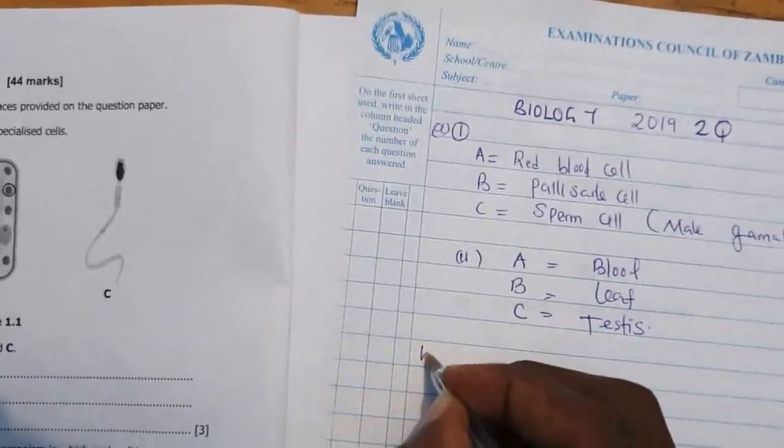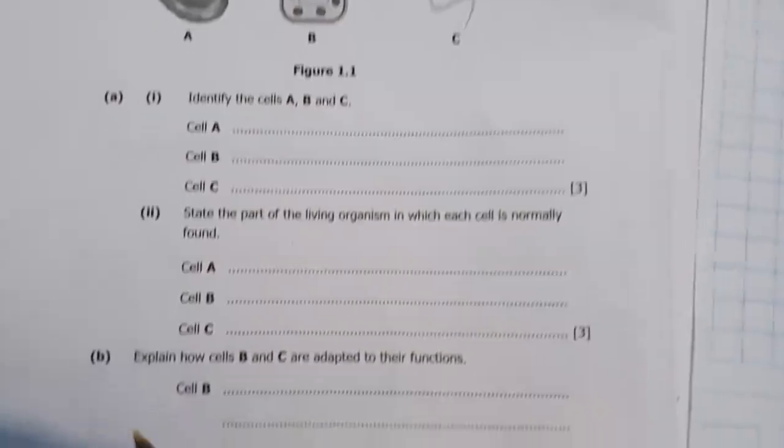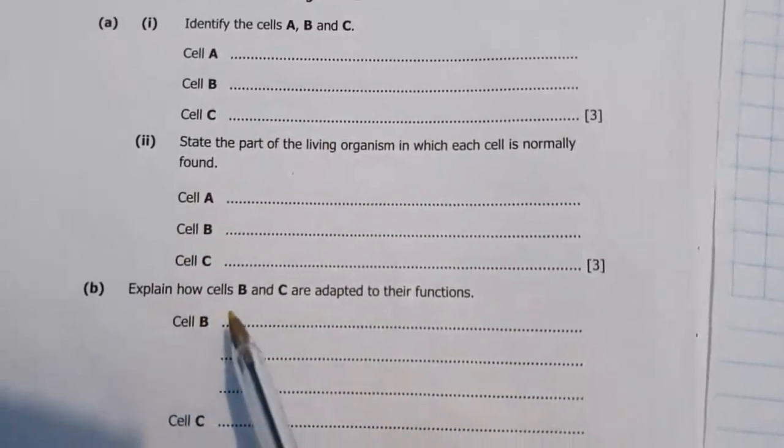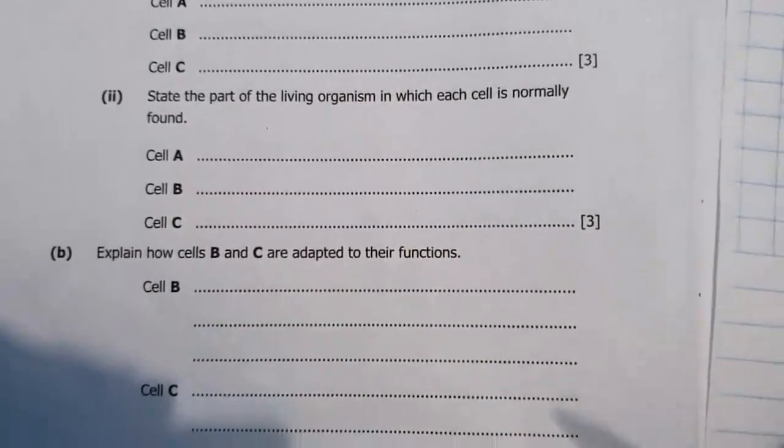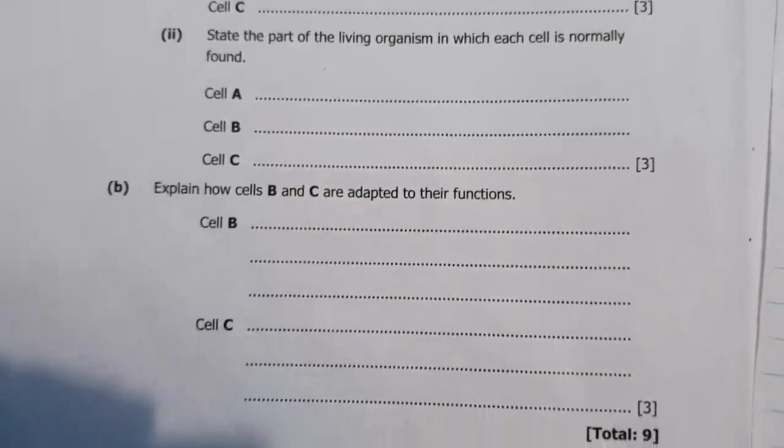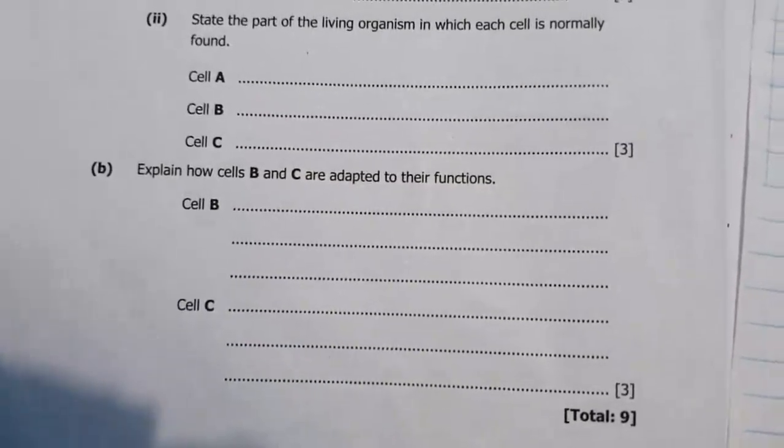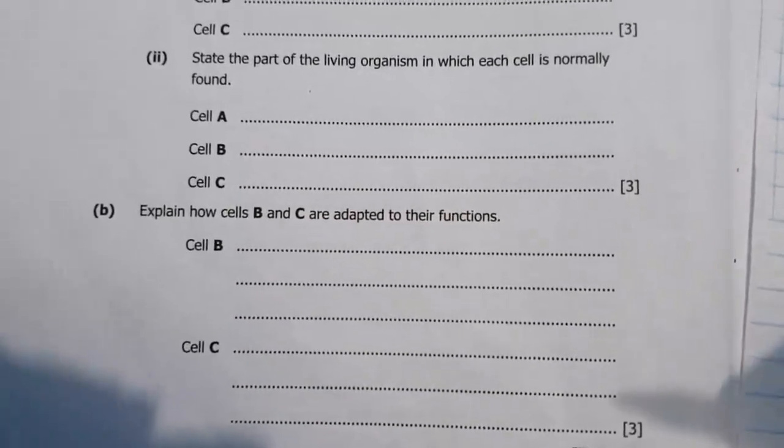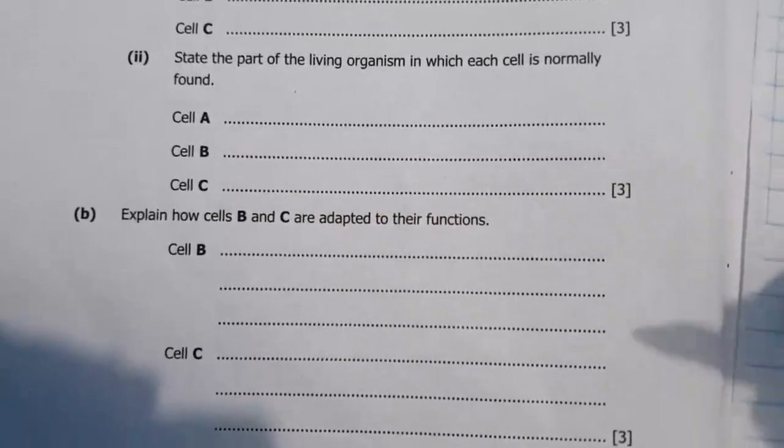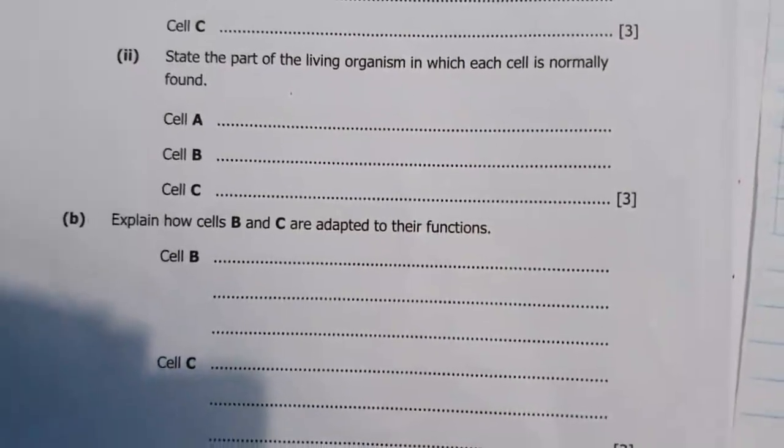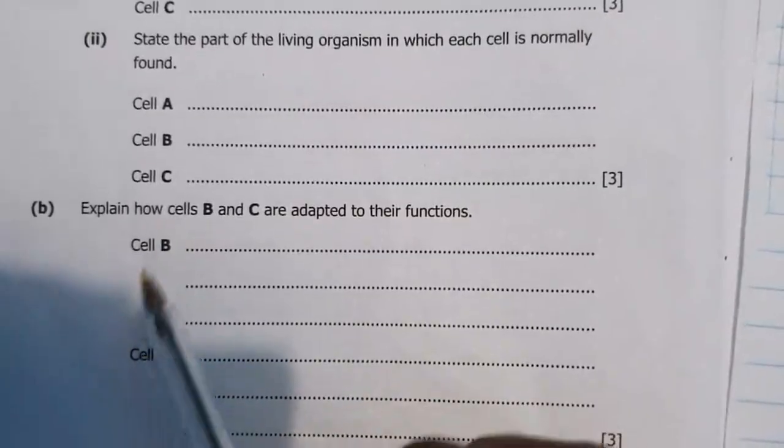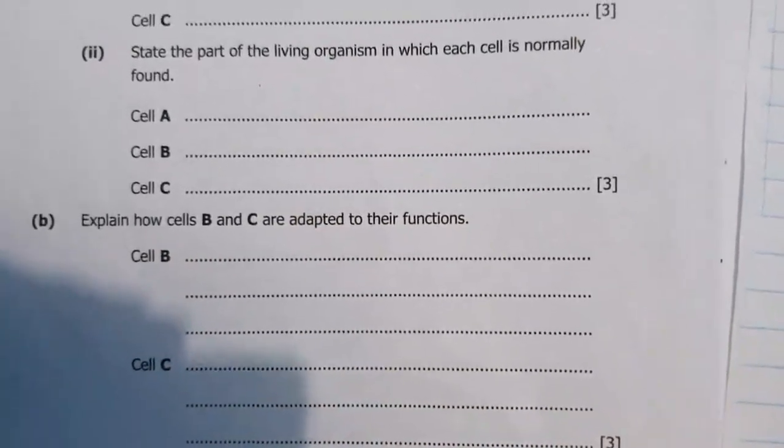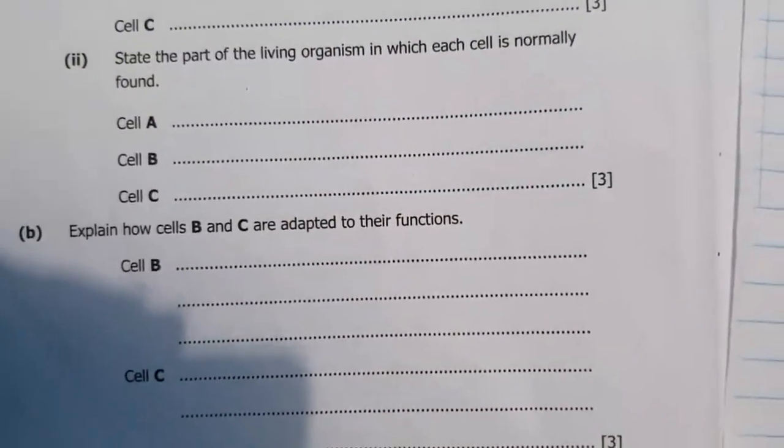Okay, then B. B says explain how cells B and C are adapted to their function. Now we need to understand the term adapt. What does it mean to adapt? To adapt is just to perform a function well. So what, in short, what features makes these cells to perform their functions well?